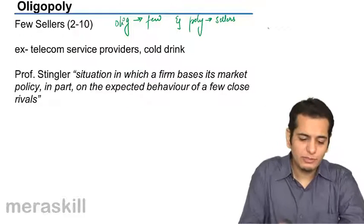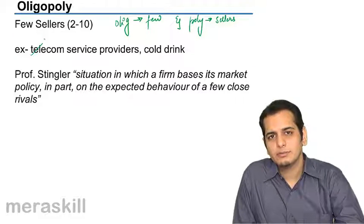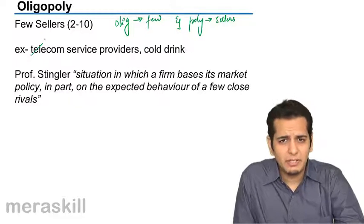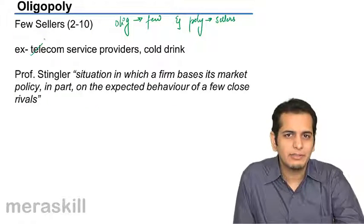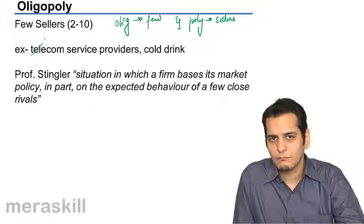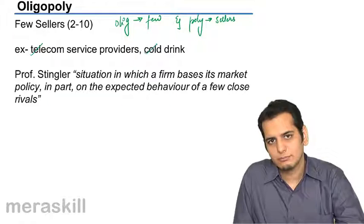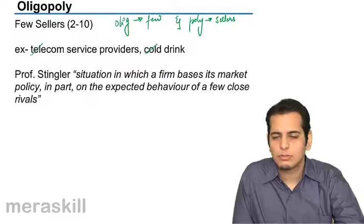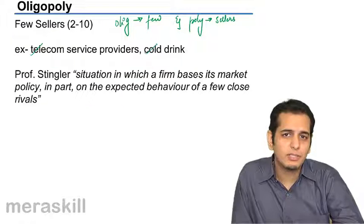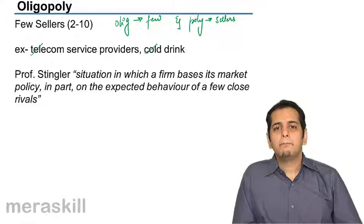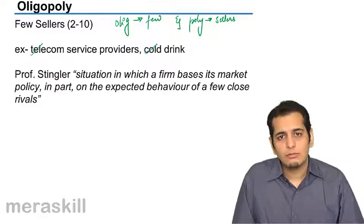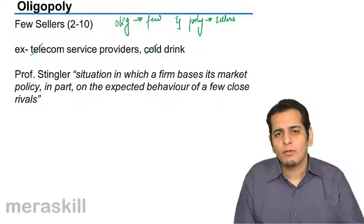For examples, there are telecom service providers — you can count them on your fingers: Airtel, Vodafone, Idea, Docomo, Reliance. There are only a handful of them. Cold drink providers — again five to six brands, maybe seven. Tire manufacturers — again five to six. Airplane manufacturers — basically two or three in the world. So there are not many sellers of airplanes or tires, not many telecom service providers, and not many aerated drink manufacturers. Their markets become oligopolistic markets.